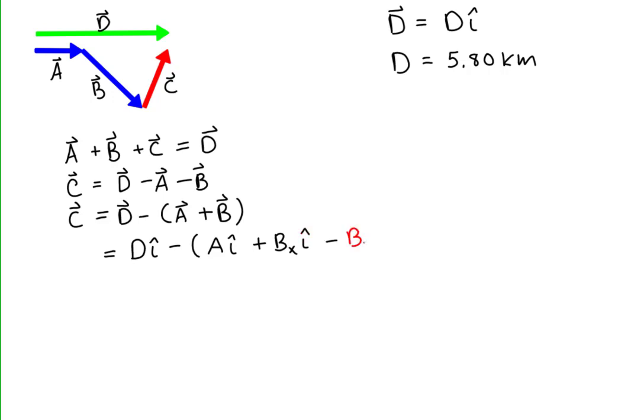Distributing the minus sign means d i-hat minus a i-hat minus the x component of b i-hat plus the y component of b j-hat.